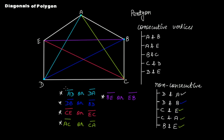So if you have a pentagon, you have five diagonals.